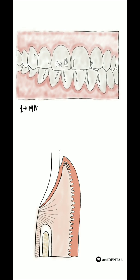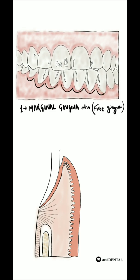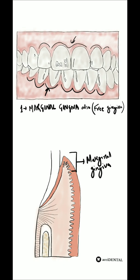First is the marginal gingiva, which is also called the free gingiva or unattached gingiva, as it is present at the margins of the tooth surrounding the neck of the tooth in a collar-like fashion. Marginal gingiva is pink in color with a width of 1 mm.